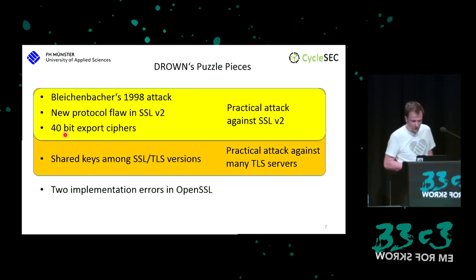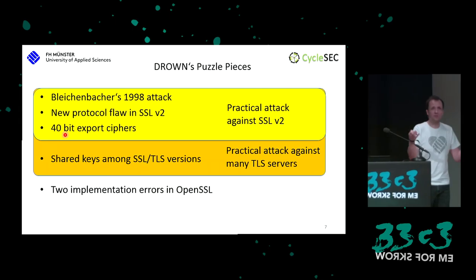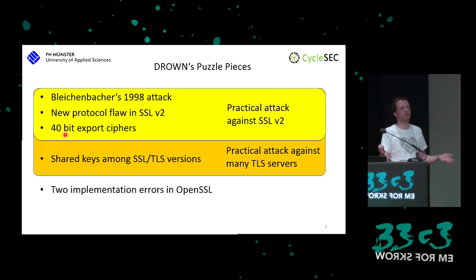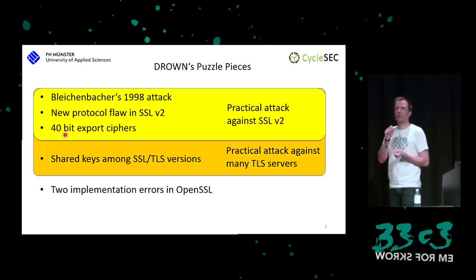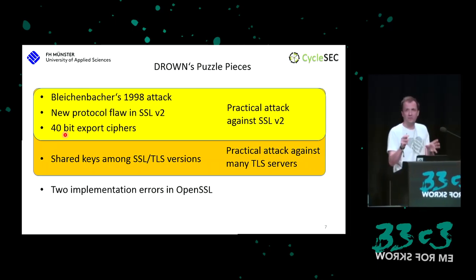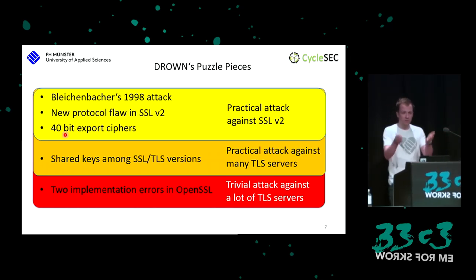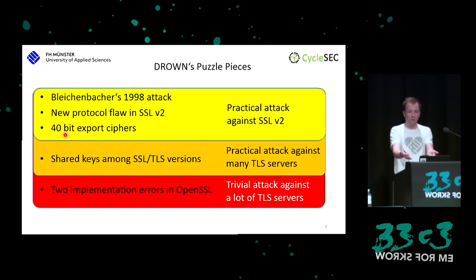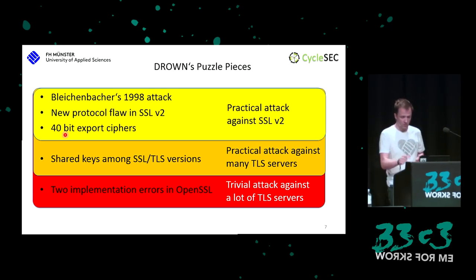There are also two implementation errors in OpenSSL. Combined with the existing DROWN attack, these give a trivial attack — one that takes minutes on a laptop against many TLS servers. Let's start with Bleichenbacher's 1998 attack. First, I want to quickly recap the RSA-based key exchange for TLS.